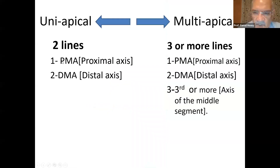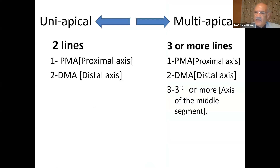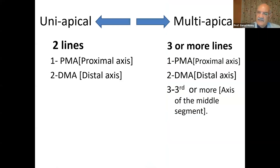So what's the difference between uni-apical and multi-apical deformity, and why do you want to differentiate? Because if you have a uni-apical deformity, you need one osteotomy. If you have multi-apical, you need two osteotomies. If you have a uni-apical deformity, you can draw only two lines. In a multi-apical deformity, you can have three or more lines — a proximal line, a distal line, and a third or more lines to represent the middle segments. So for uni-apical you have a proximal axis and distal axis; for multi-apical, you add a third line.